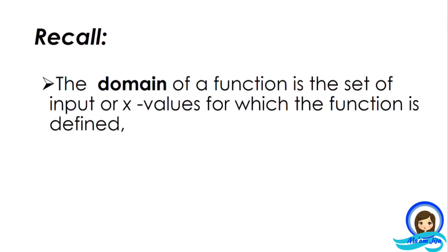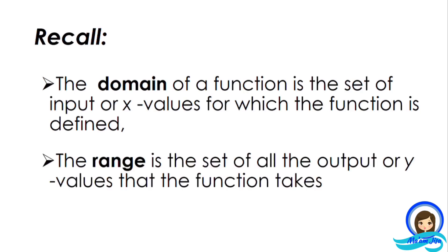As I recall, the domain of a function is the set of input or x values for which the function is defined. The range, on the other hand, is the set of all the output or y values that the function takes. Therefore, in a set of ordered pairs, the first value belongs to the domain and the second value belongs to the range.